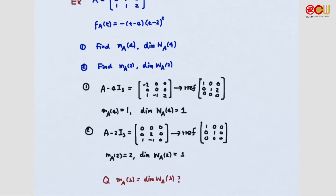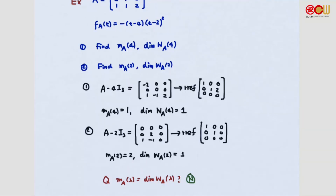So the question is: are the multiplicity of lambda and the dimension of the eigenspace corresponding to lambda always the same? Not necessarily, not in general. In the case of eigenvalue 4, they are the same, but for eigenvalue 2, they are different. Although these two numbers may not be the same, there is a connection between them.